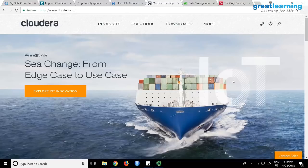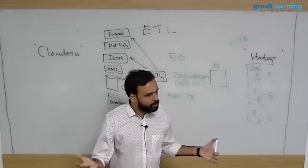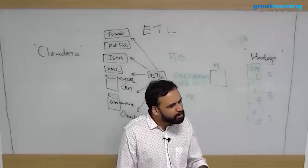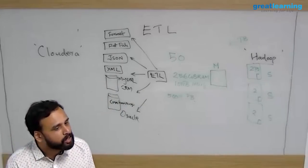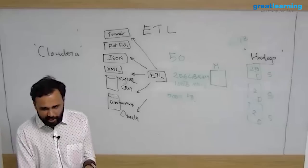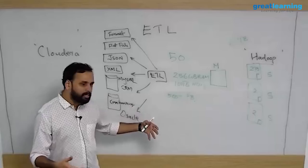Their 50-node cluster had each node with around 256 GB RAM and 100 terabytes of storage. So 50 times 100 terabytes gives 5 petabytes of storage, and 256 GB times 50 gives the cluster's RAM capacity. That is actually a very minimal, cheap Hadoop cluster. Typically you have 500 to 1,000-node clusters because data is in petabytes — 1,000 terabytes is one petabyte — and most companies have huge amounts of data.